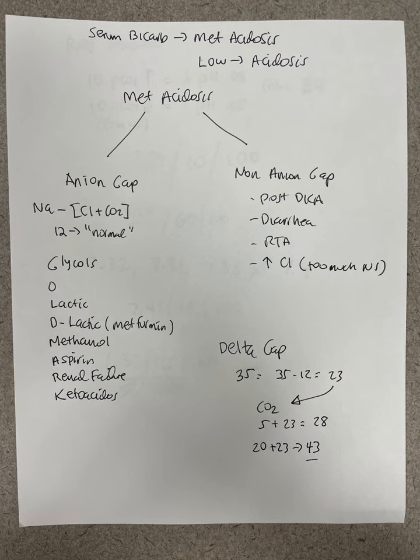Diarrhea will cause a non-gap metabolic acidosis. Post-DKA non-gap is also common. Renal tubular acidosis — type 1, type 2, type 4 — those are non-gap acidoses. Hyperchloremic acidosis from too much saline — if you go wild with saline, you can cause a non-gap metabolic acidosis.